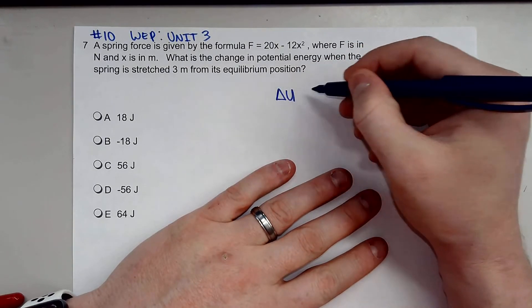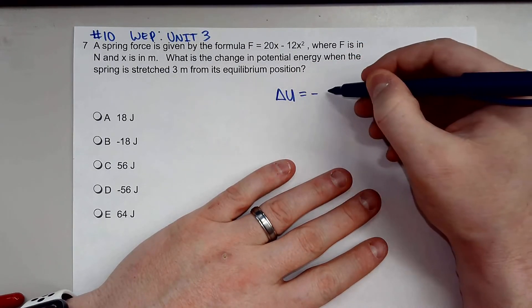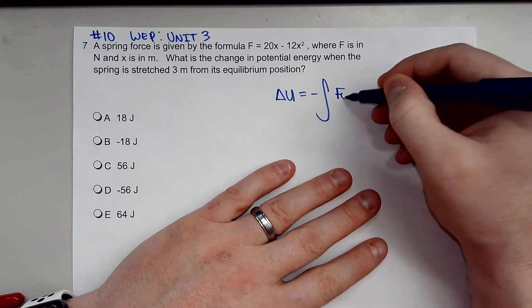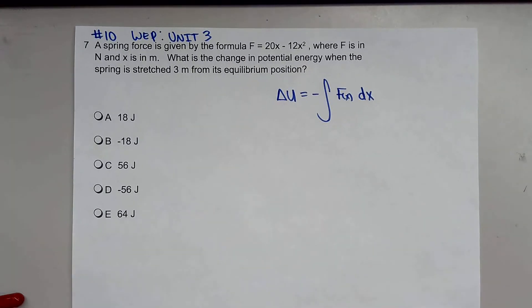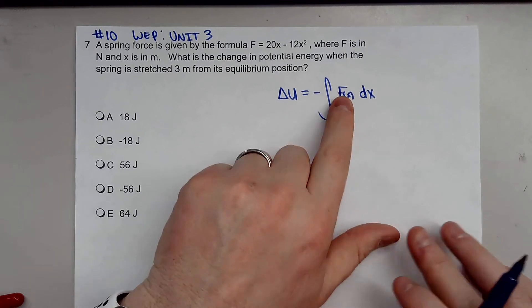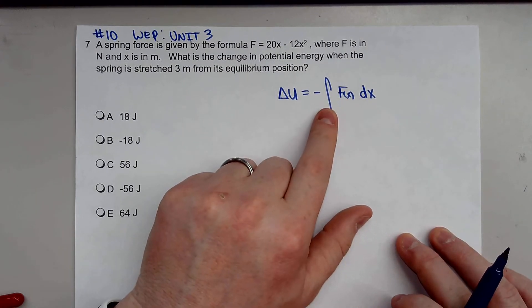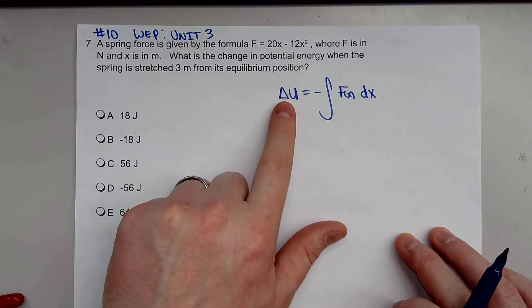We know that the change in potential energy is equal to the negative integral of the force function with respect to X, DX. So if we know our force function and we integrate that, we can then get how much change in energy we have.